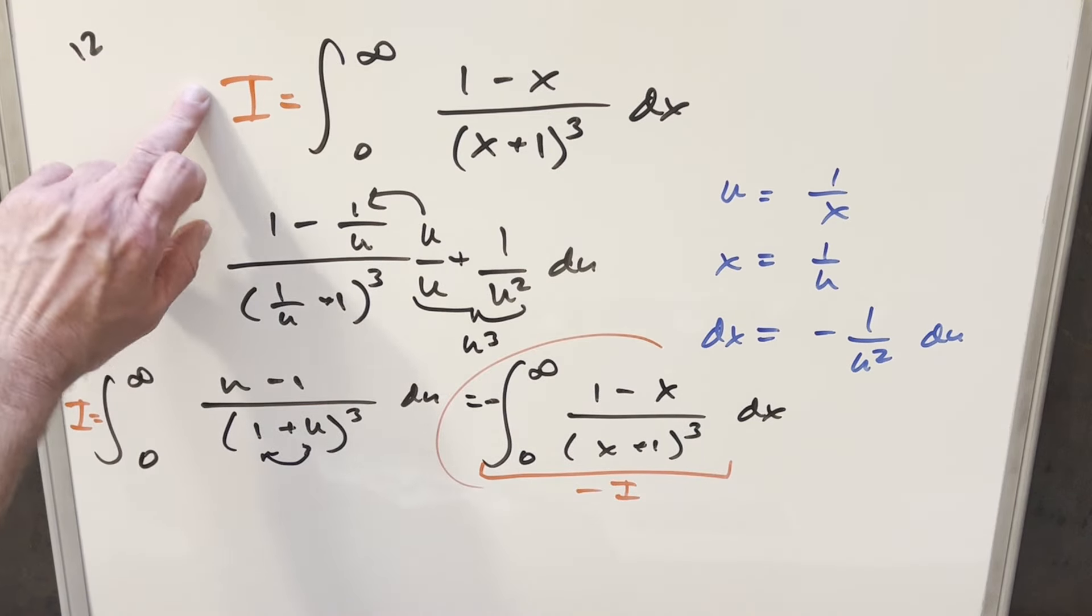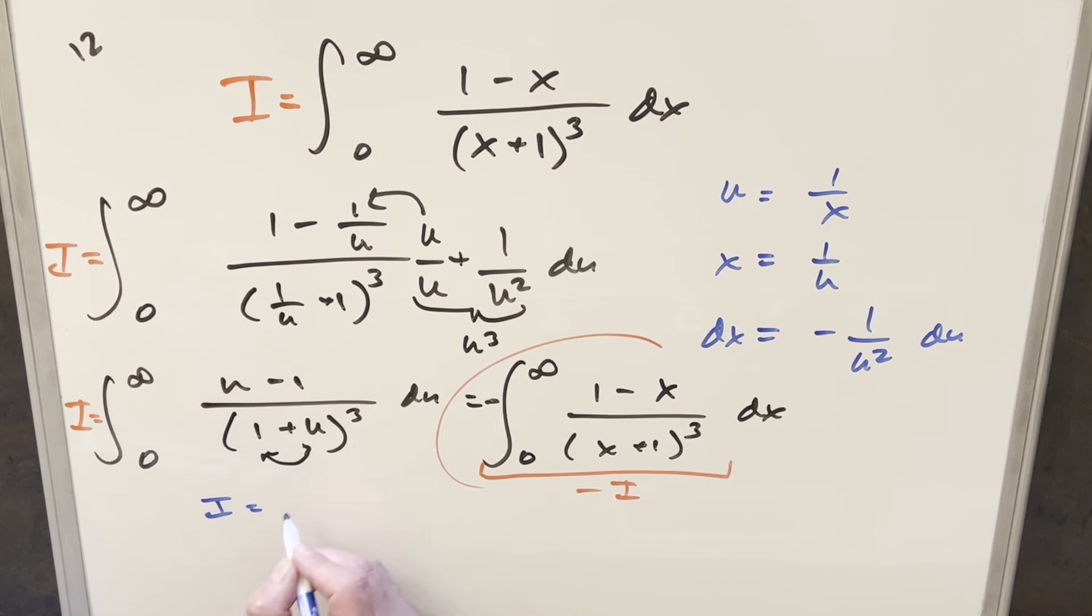So actually, if i is equal to minus i, we can create a little equation over here. i equal to minus i. Add i on both sides. Doing that, we end up with just 2i equal to 0 or i equal to 0.